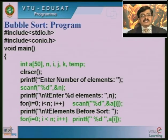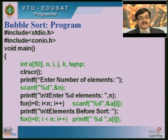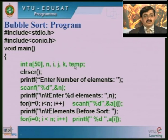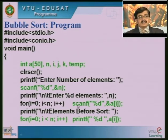Coming back to the bubble sort program: we declare an array of 50 elements, seek the number of elements, and use local variables i, j, k for looping and a temp variable for swapping two elements required in the sorting process. We seek the number of elements n, then read all n elements of the array using a[i] with a loop.